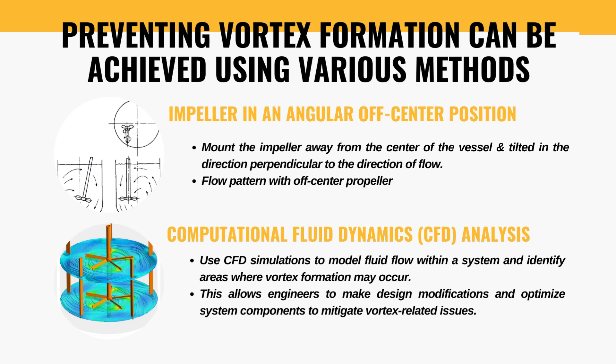One of the easiest ways to prevent vortex formation is by offsetting the position of the impeller. You can mount the impeller away from the center of the vessel, or in some cases tilt it in a direction perpendicular to the flow direction, or simply off-center the propeller. Vortex formation can be controlled just by offsetting the impeller from the center or placing it perpendicular to the direction of flow, which prevents vortex formation.